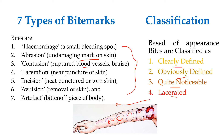In the clearly defined type, the impression of the teeth is easily visible — the complete shape and dimensions of the teeth are visible. As the degree of injury increases, the clarity and definition of the bite mark decreases. So from clearly defined to lacerated, clarity decreases as injury severity increases.